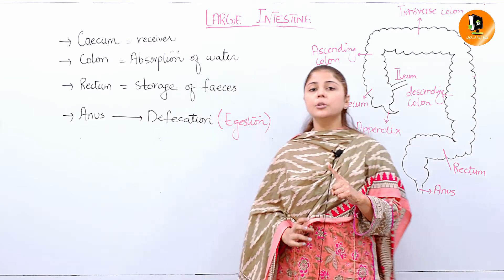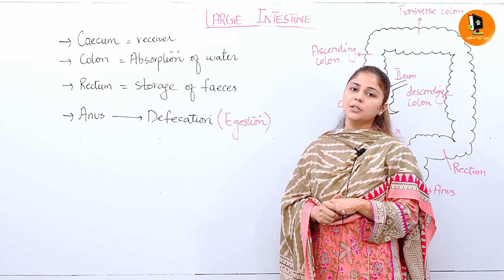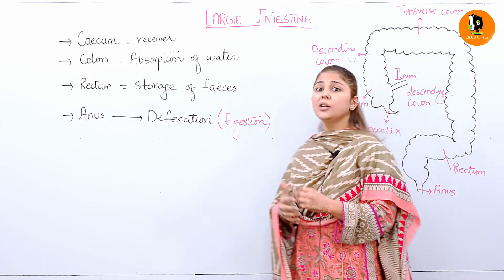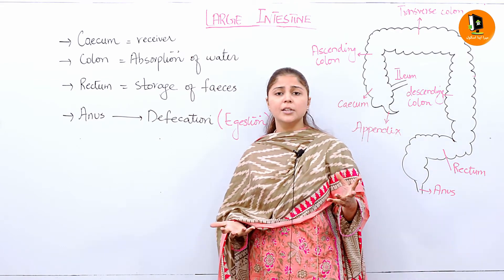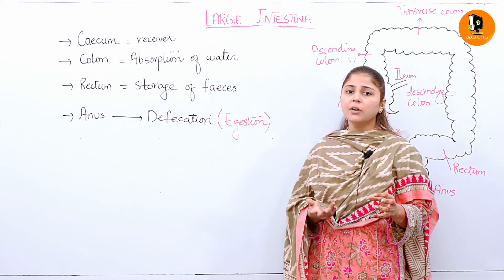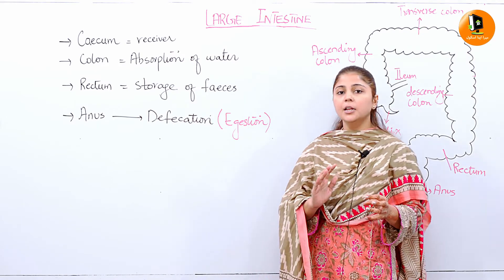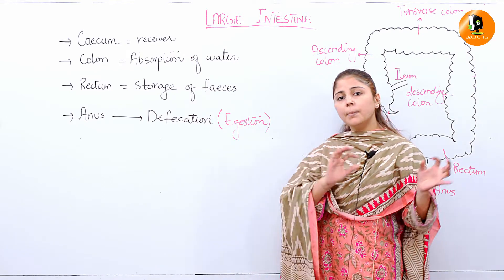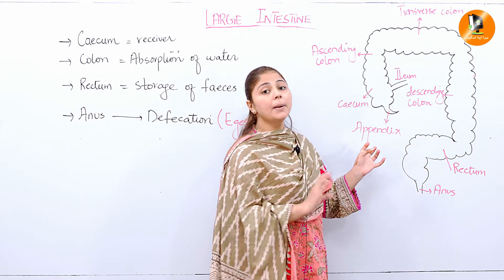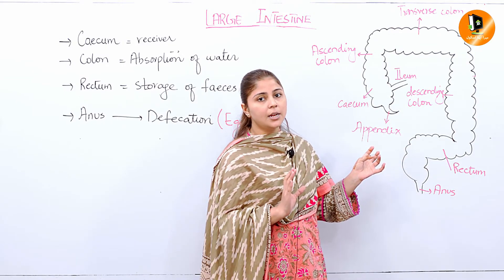Plus one more thing — yahaan par bacteria bhi present hote hain. If in the undigested food there is cellulose present, for example, toh uski digestion bhi karwa sakta hai, aur uske other functions bhi yahaan par present hain. So one more thing to add: bacteria bhi present hote hain large intestine ke andar.